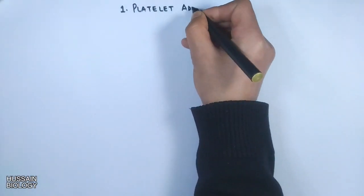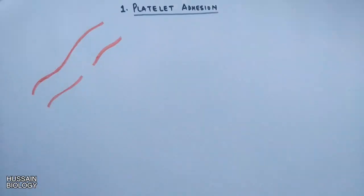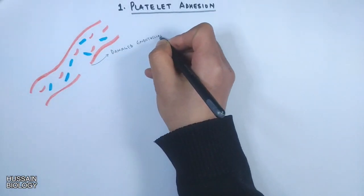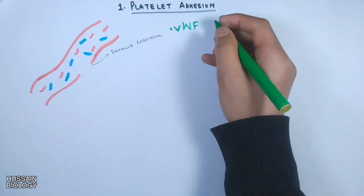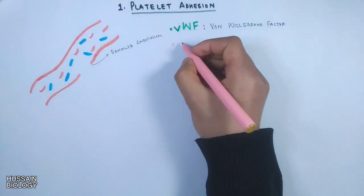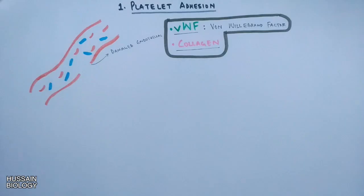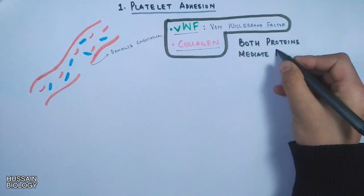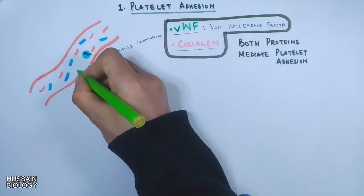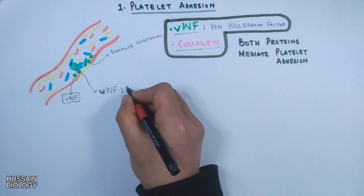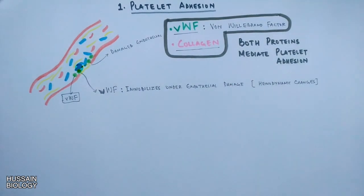First, let's look at platelet adhesion. When there is a damaged blood vessel, blood oozes out and changes the hemodynamic properties of blood. Two proteins play an important role here: the VWF protein — von Willebrand factor — and the collagen protein. Both proteins mediate platelet adhesion. Prior to endothelial damage, VWF is a mobile protein, but once there is endothelial damage, VWF immobilizes and sticks at the damaged site on the blood vessel.